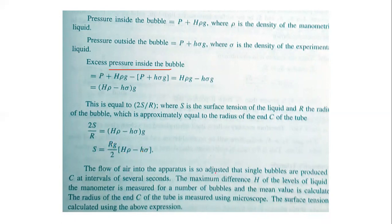The flow of air into the apparatus is adjusted so that single bubbles are produced at intervals of several seconds. The maximum difference h of the liquid level in the manometer is measured for a number of bubbles and the mean value is calculated. The formula is S equal to r times g by 2 times (h rho minus h sigma). That is the formula used to determine surface tension.